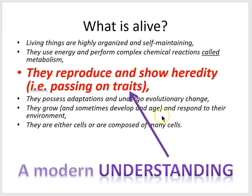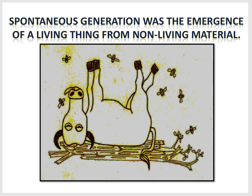For thousands of years, people believed in a process called spontaneous generation. For example, the ancient Greeks and Romans believed that dead bull flesh could spontaneously generate into bees.